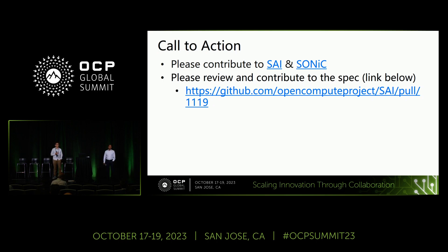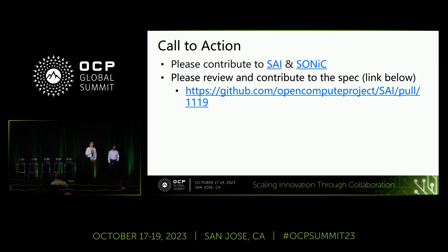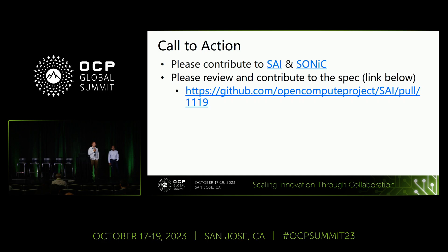Audience question: The problem statement at the beginning about data center traffic problems - does it reference your HPC network architecture or a different reference? The presenter clarified: The problem statement applies when you have a large cluster like 64K to 256K GPUs with a 3-tier network. Using traditional technologies like DCQCN without IFA, customers find that congestion and load balancing prevent them from getting full bandwidth out of the fabric.